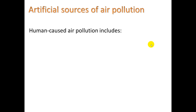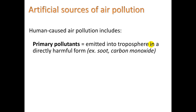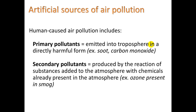We have two other terms used for air pollution. Human-caused air pollution includes primary pollutants, which are emitted into the troposphere in a directly harmful form, such as soot and carbon monoxide. But these primary pollutants can form secondary pollutants — produced by the reaction of substances added to the atmosphere with chemicals already present in the atmosphere. For example, ozone present in smog. We'll take a look at how ozone forms in a little bit.